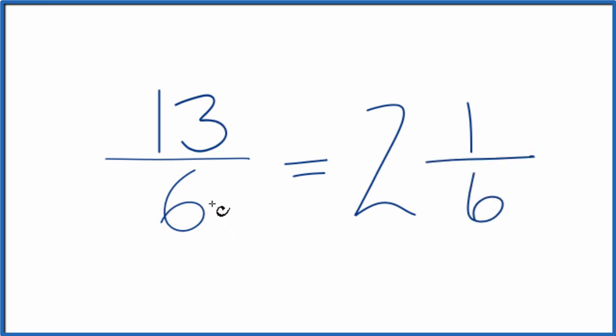And 13 over 6, the improper fraction, that would equal the mixed number 2 and 1 over 6.